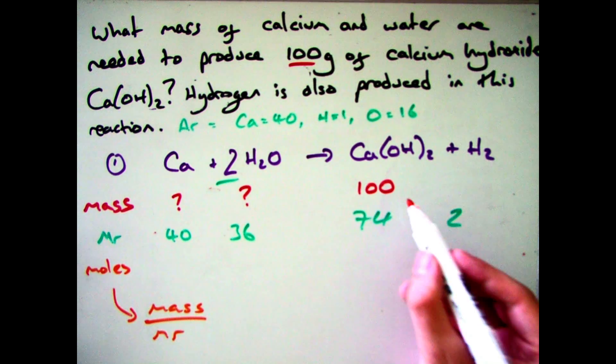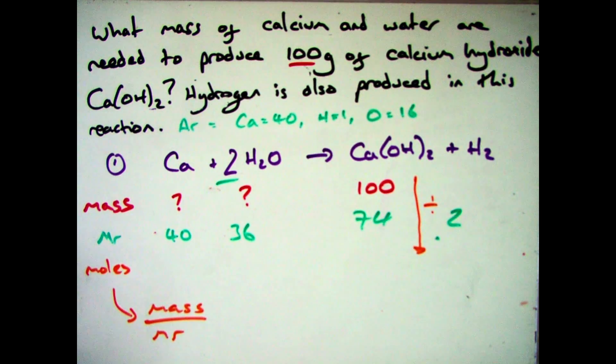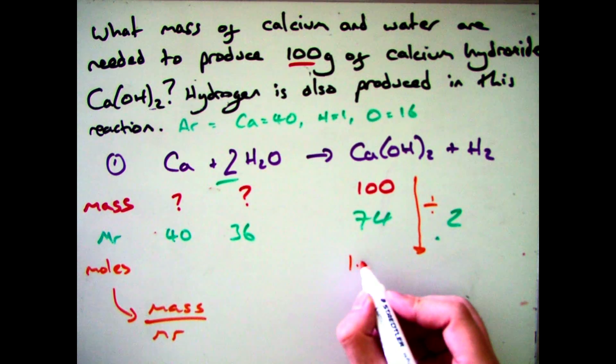So if we move on to the simplification bit then, which is working out the moles. Now provided you put this in the right order, you need to divide down. So 100 divided by 74. And then to work out the mass, you multiply up.